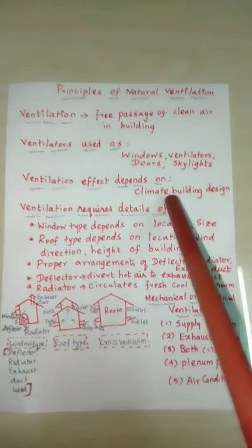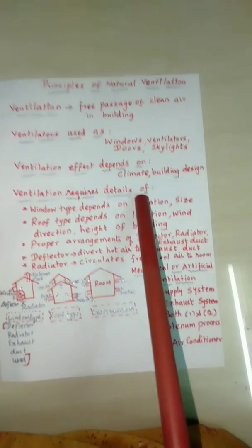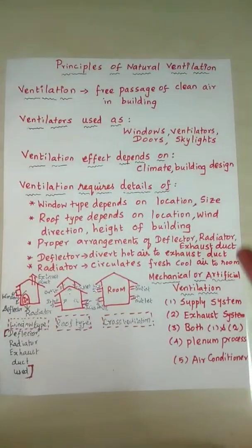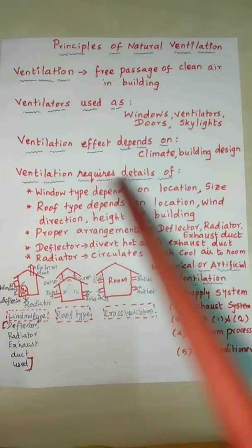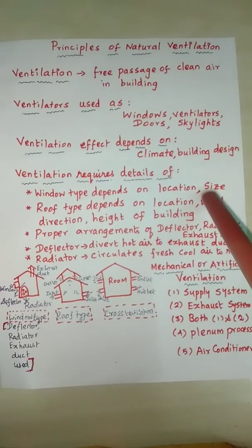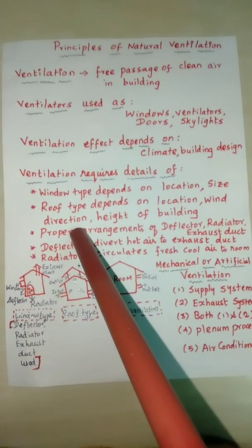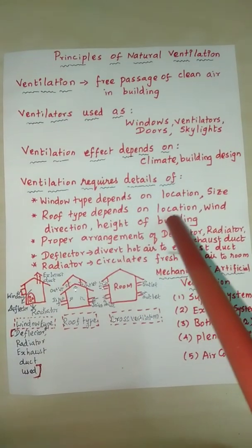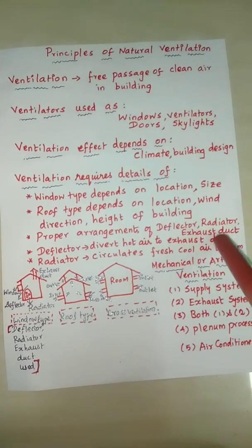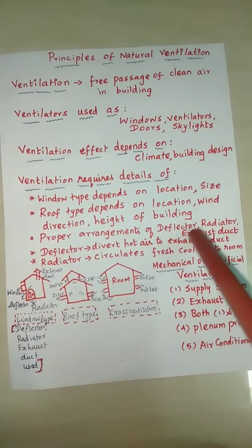Ventilation requires attention to several details. It needs the window type, and the location and size of the window are very important. The roof type also matters. The natural effect of wind direction is very important, as is the height of the building. Proper arrangements of deflectors, radiators, and exhaust ducts are also required.